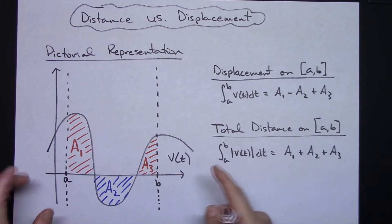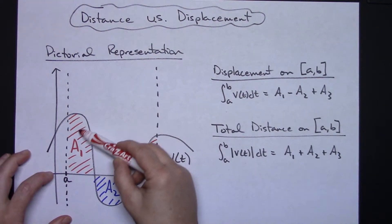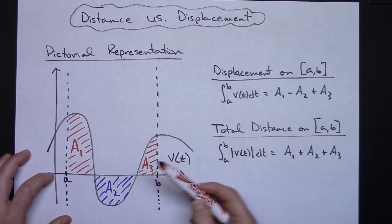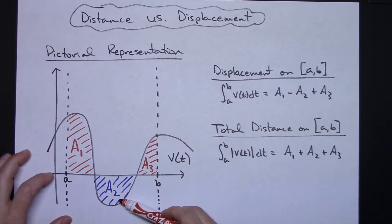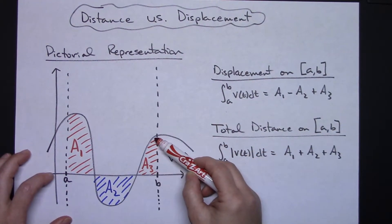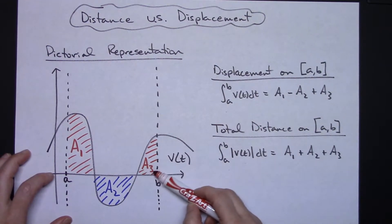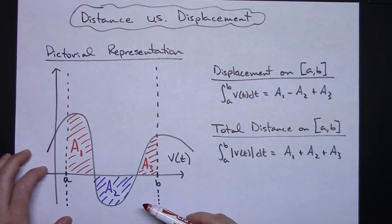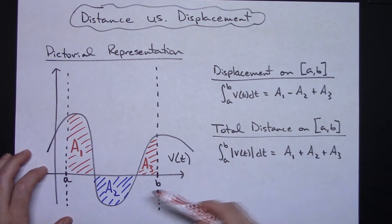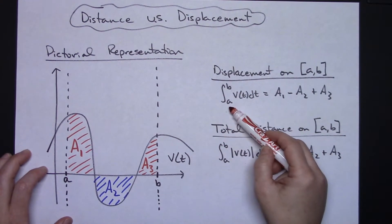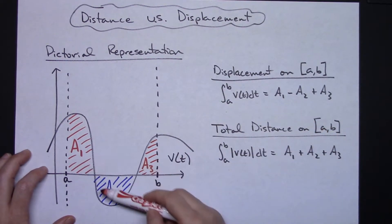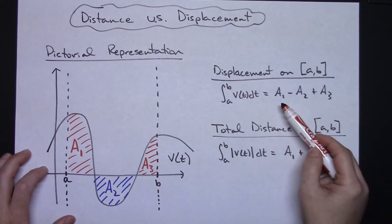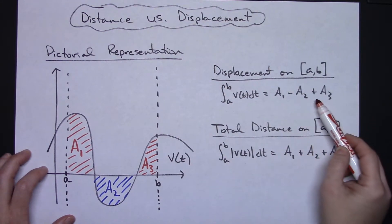And it is signed area — you don't want to forget that. So this section right in here, a sub 1, would be a positive area, and the area under the curve here in a sub 2 would be a negative area because it's signed. And then the area under here, a sub 3, that area would be positive again. If I need to find the displacement from a to b and I know the velocity function, all I have to do is integrate from a to b — a straight integration. That's going to automatically take care of things being positive and negative, so a sub 1 minus a sub 2 plus a sub 3.